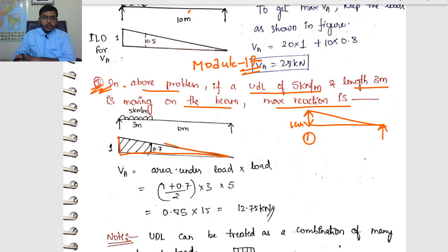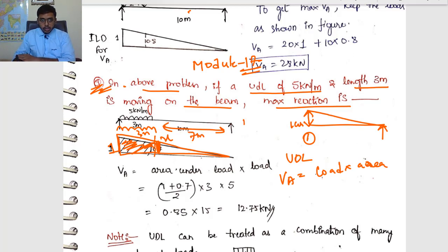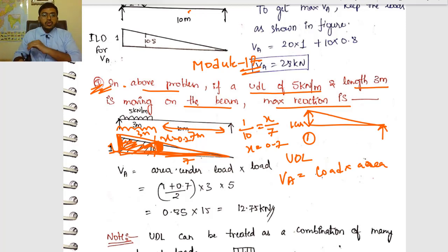Place the UDL where you get maximum reaction — obviously where there is more area. For a UDL, multiply the load into the area under it. Here the coordinate at one end is 1 unit. Let the other coordinate be x. Using similar triangles: 1 divided by 10 equals x divided by 7, giving x = 0.7.